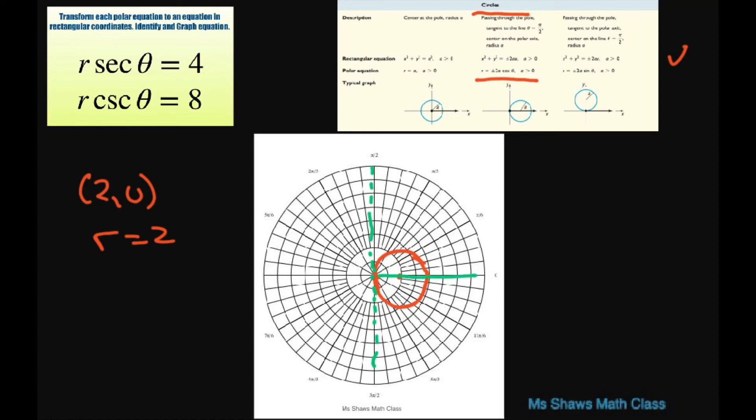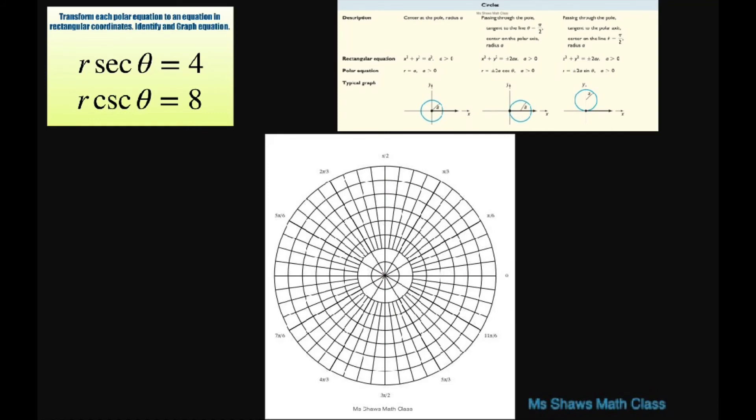At the second one we had the center was 0 comma 4 and the radius was 4. So we go 0 comma 1, 2, 3, 4, right about there, and then we're going to go out 1, 2, 3, 4 up. So let's put the center in 1, 2, 3, 4. Alright, and then just draw your circle. Try to make the radius look similar here. So there's your circle.